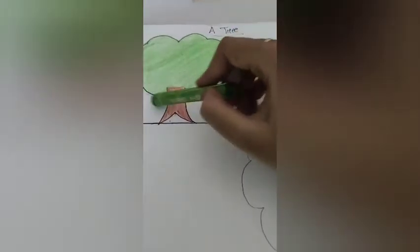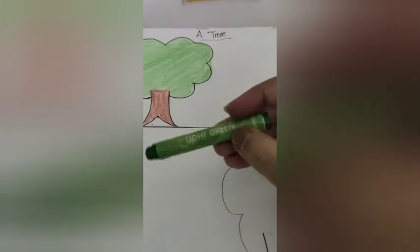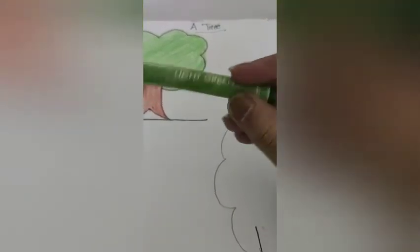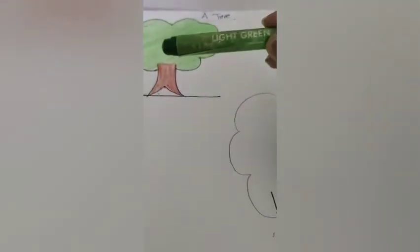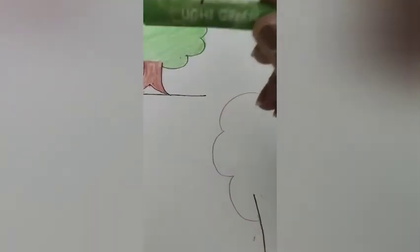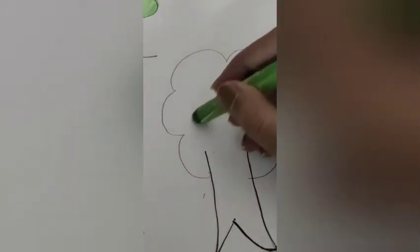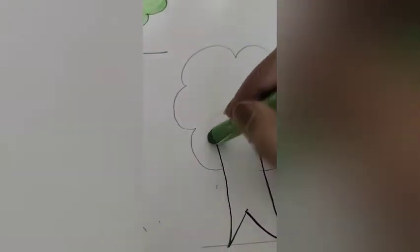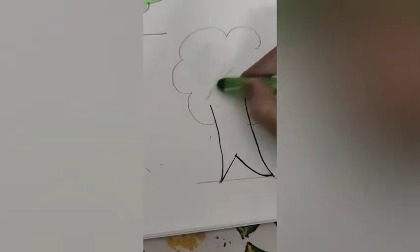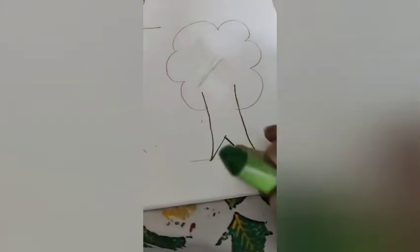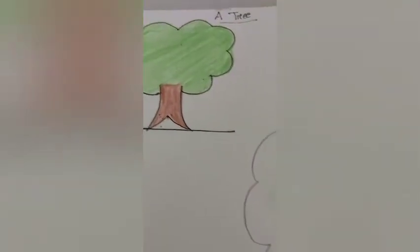And this portion, the tree leaves portion, I have filled with light green color. You can see two green colors in your crayon box. Use that light green to fill here. You can fill the way I have said. You can fill the whole tree with green and this one with brown. So all of you understood?